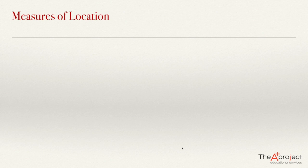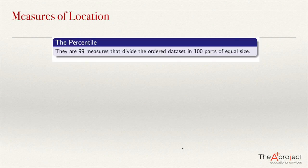The present video studies measures of location. Measures of location are numbers that represent the relative position of a datum in the data set. The most important measures of location are called the percentiles.